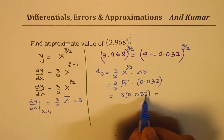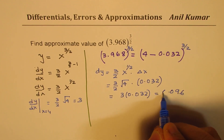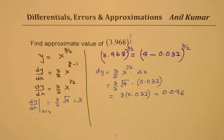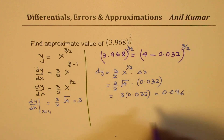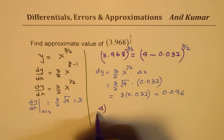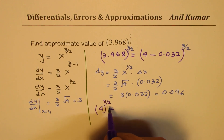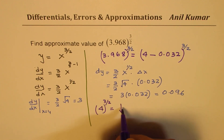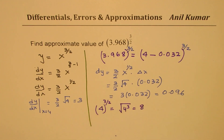So that is your change. Now, we should also find what is the value of 4 to the power of 3 over 2. That is to say, square root of 4 and then cube. So square root of 4 is 2, and 2 cubed is 8. So this is 8. And that is the change we have to take away.